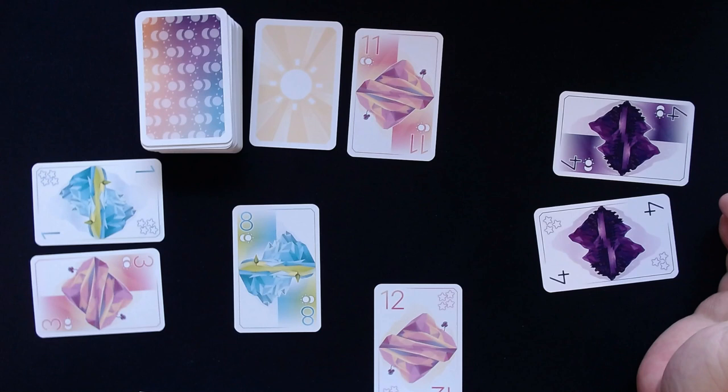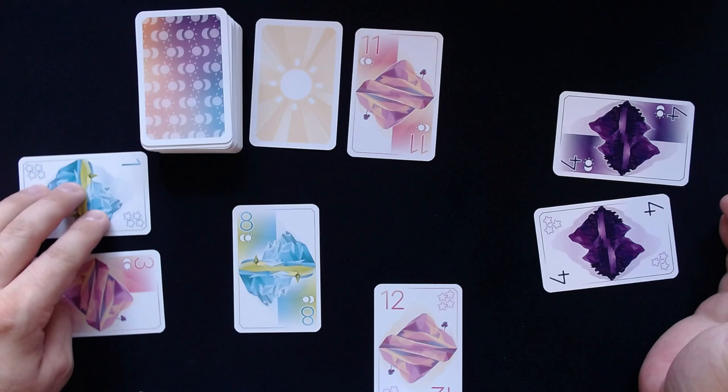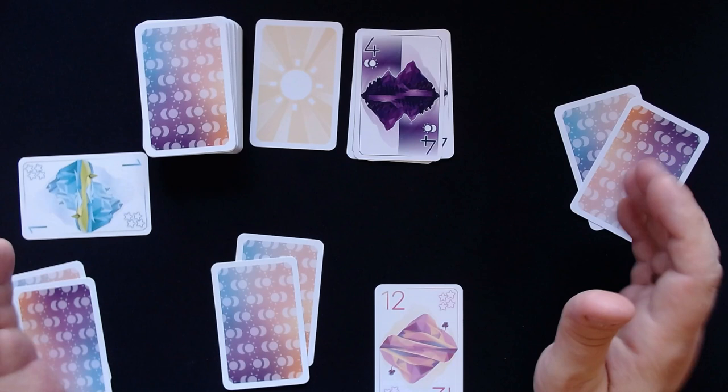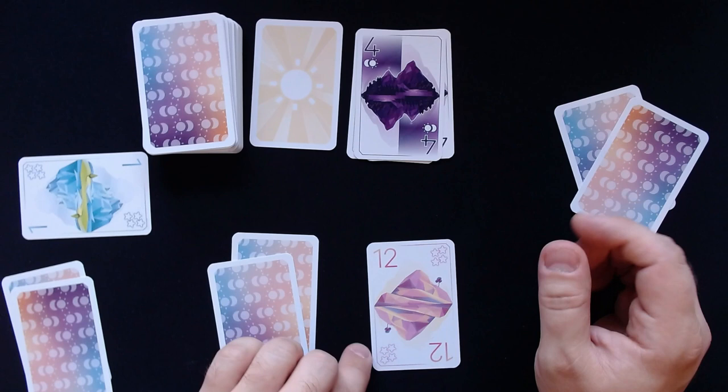You then remove all remaining cards from play, deal two new cards to each player and start the next round. The game ends when the deck is empty and players tally their score based on the number of stars on the cards they collected in front of them. The player with the most stars wins the game. And that is already Day and Night in a nutshell.